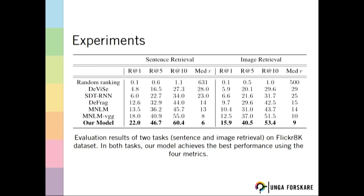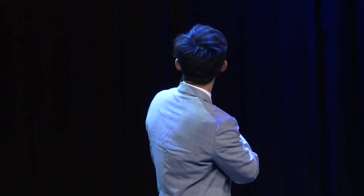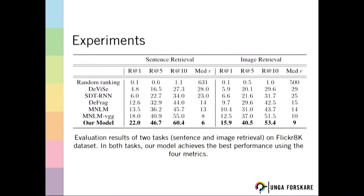Here is the experiment section. We actually do two tasks: one is called sentence retrieval and another called image retrieval. Image retrieval is something we use every day — in Google Image Search, we type in a sentence and find the closest image to the sentence. We give the model a sentence and want to find the most aligned image. In both of these tasks, our model achieved the best performance at the time using four metrics.